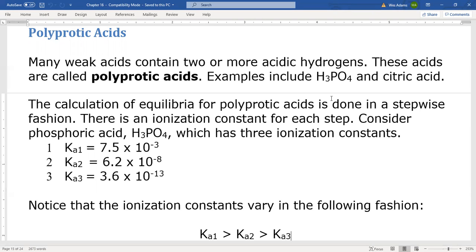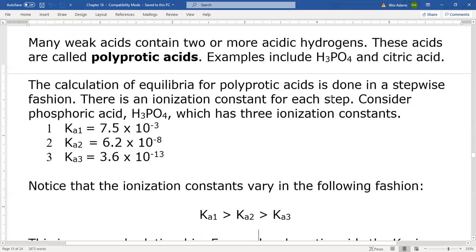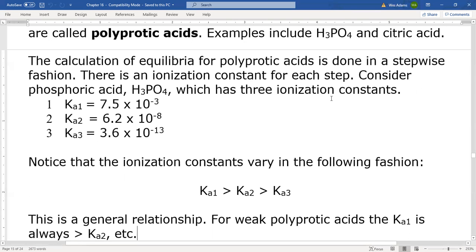So if you had to do an approximation, just do it like another Ka problem and use the approximation. And that's generally what happens when these ionizations occur in a stepwise fashion. Ka1 is greater than Ka2, which is greater than Ka3, usually by a long shot. So that's the general relationship. The ionization constants get progressively smaller.